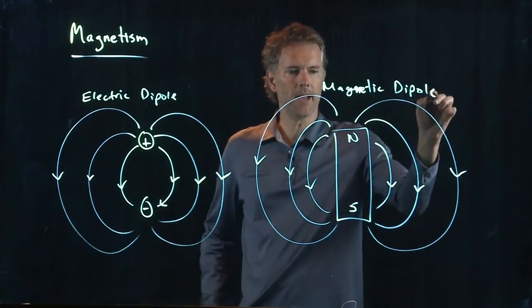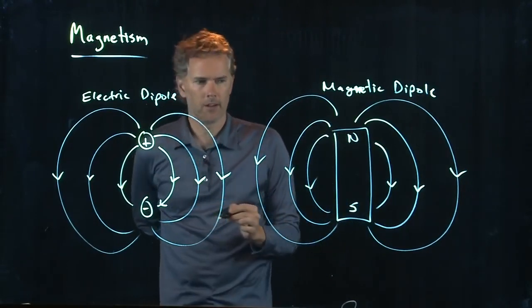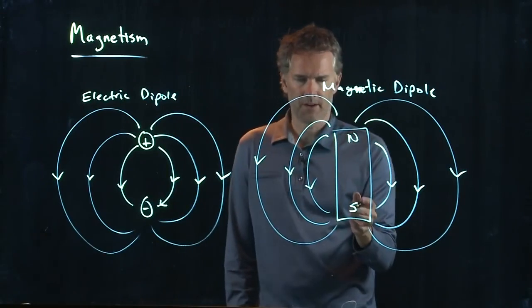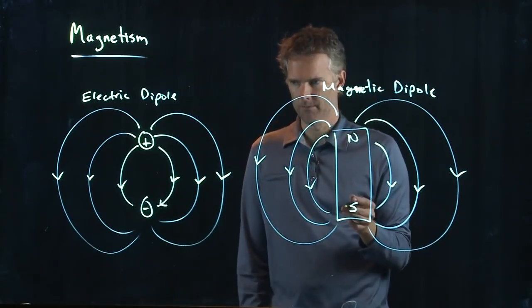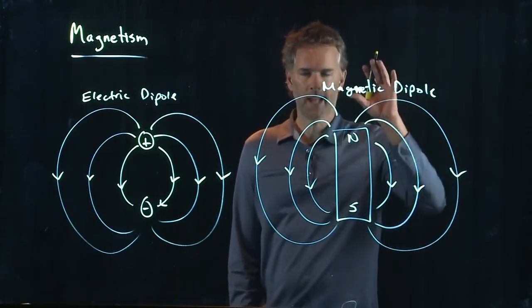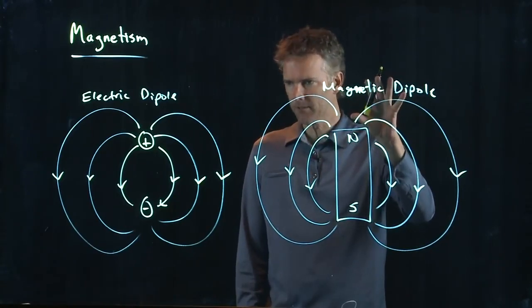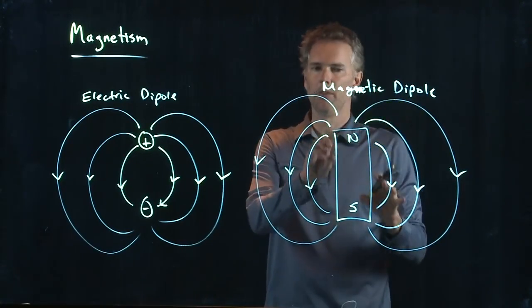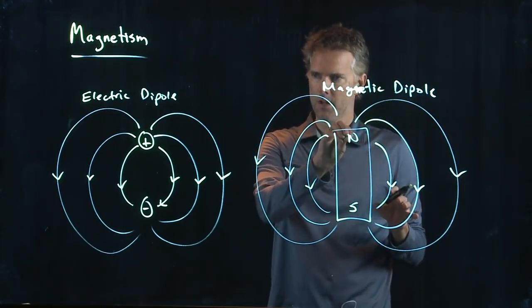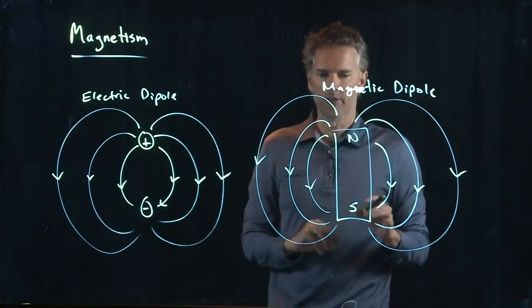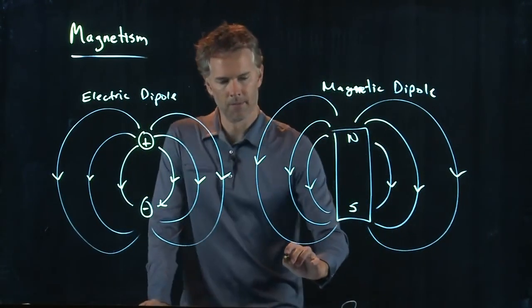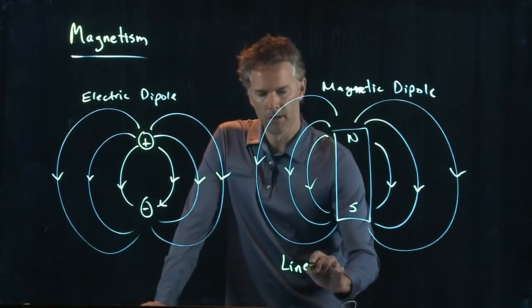So, one question that you may have is the following. If north and south always come together, then I must always have a dipole field for magnetism. And that is true. There is no monopole field. There's no just north charge. So, lines of B in fact are continuous. And this is an important statement.